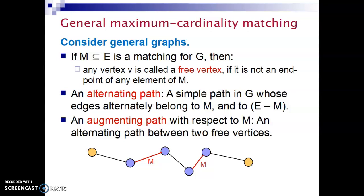Let's consider general graphs. With general graphs, we mean graphs that are not bipartite or have any special property. How do we find a matching or a maximum cardinality matching in a general graph? Let's define some terms that we are going to use.